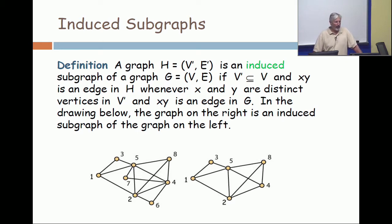and on the right I show a subgraph, and if you'll notice, the vertices 6 and 7 are omitted. But look at the remaining vertices. Every possible edge that could be present in this subgraph is present.